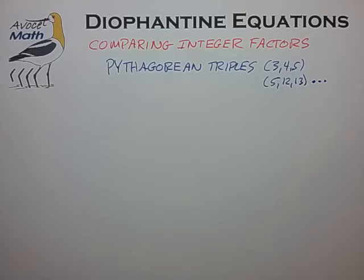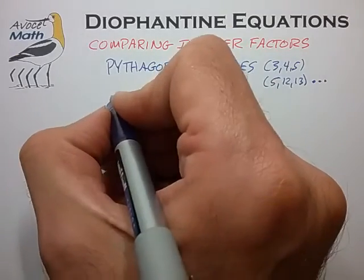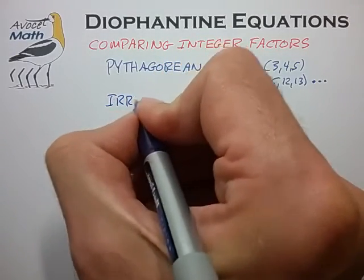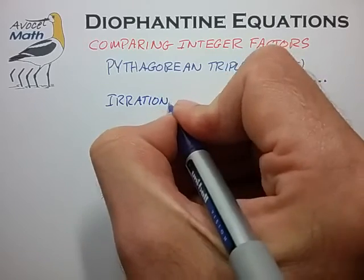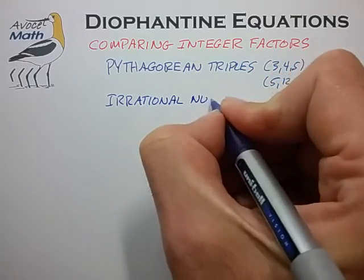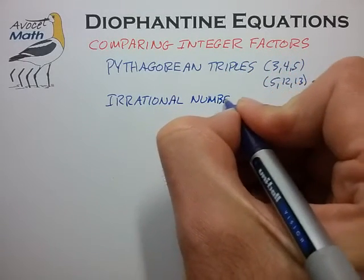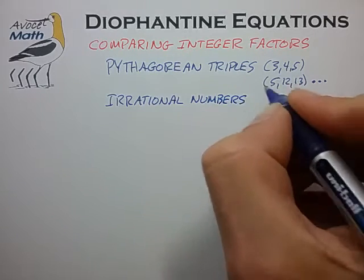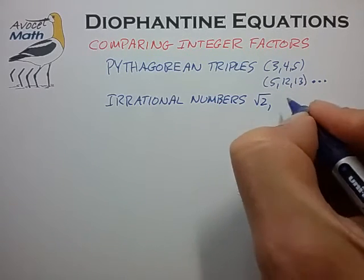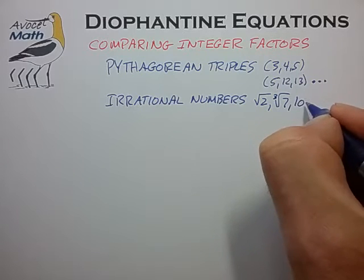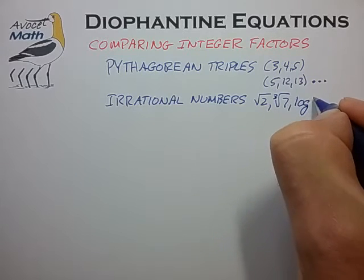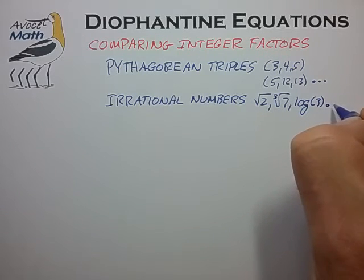The comparing of integer factors also plays a key role in establishing the existence of irrational numbers. These are numbers such as the square root of 2, the third root of 7, maybe log of 3, and many more.